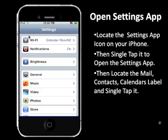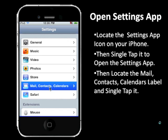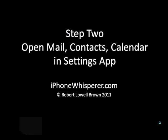Once the Settings app opens, scroll the screen down by sliding upward and locate the Mail, Contacts, and Calendars label. Once you locate that label, single tap it. This opens the Add Account or accounts section.